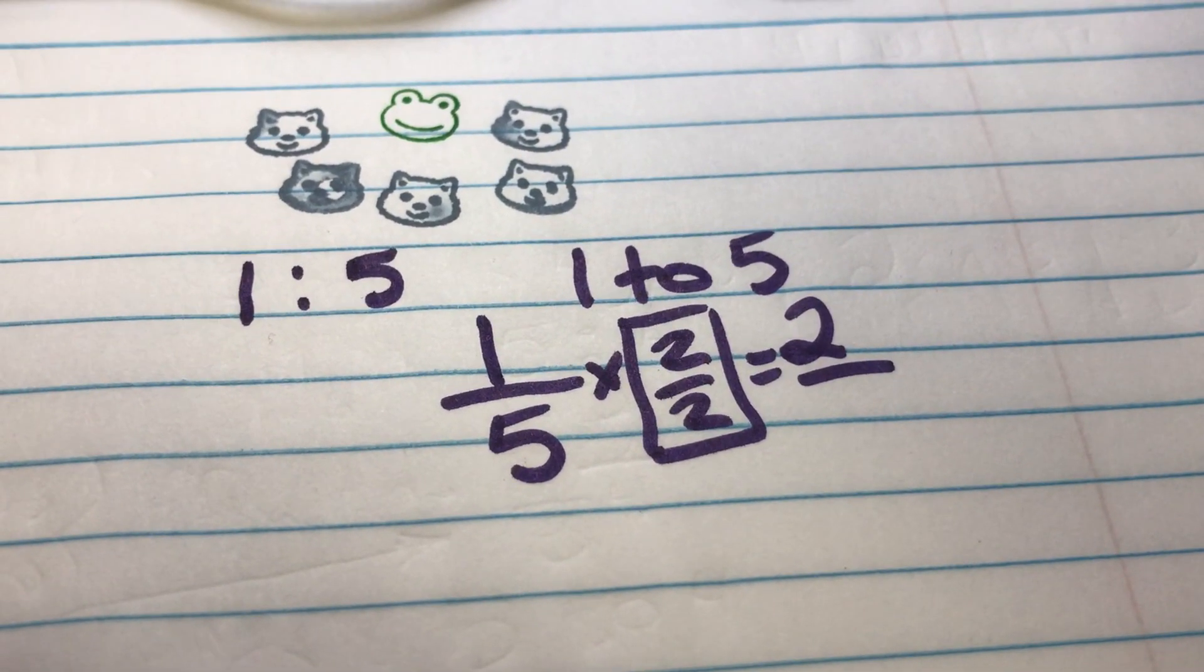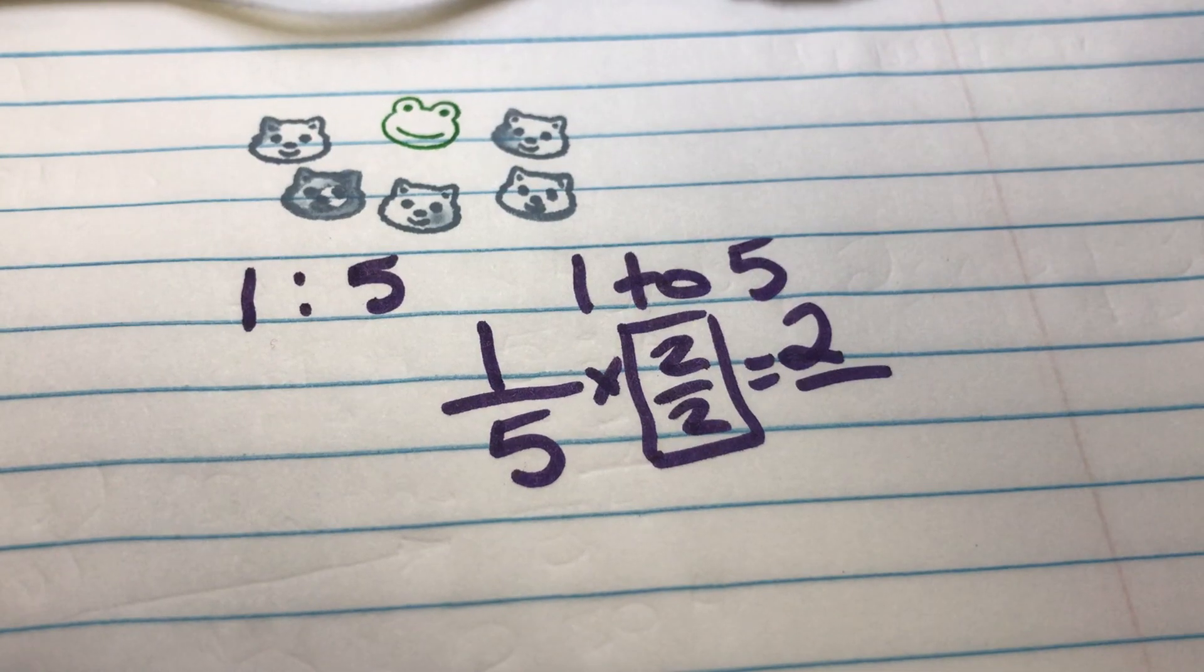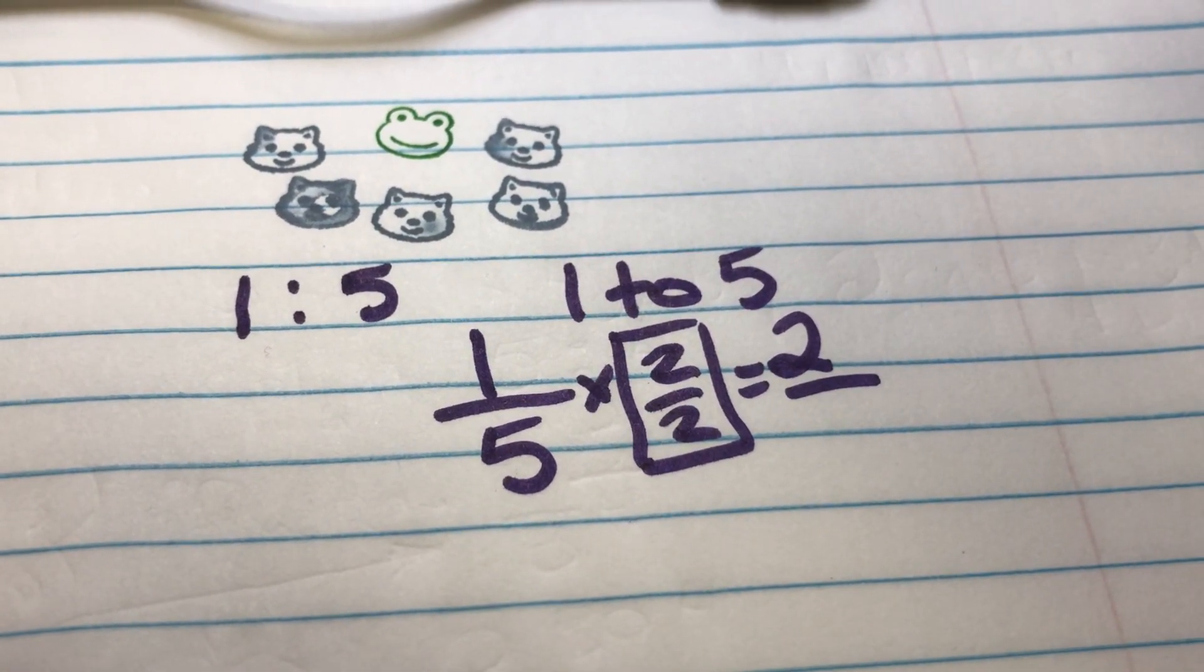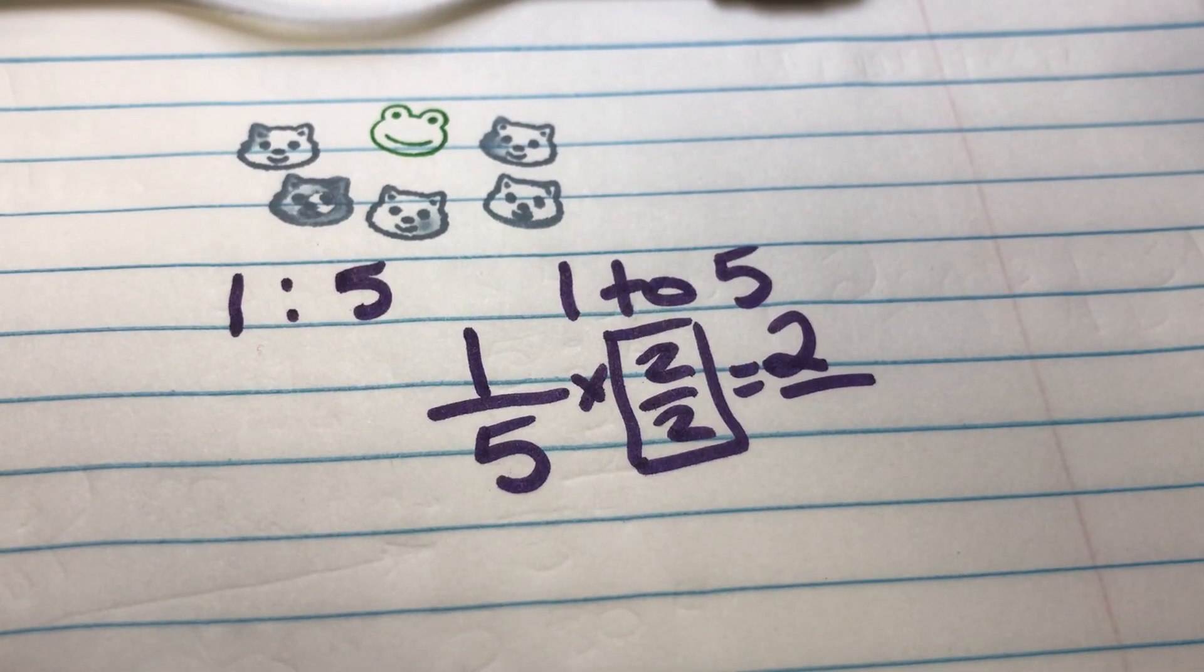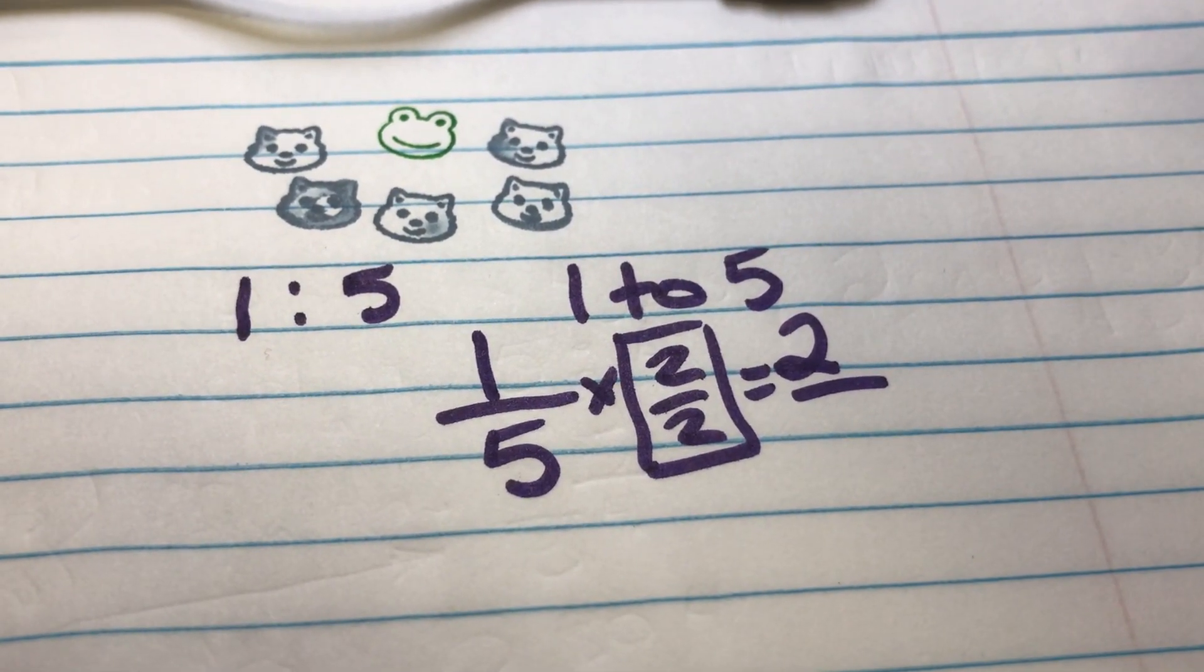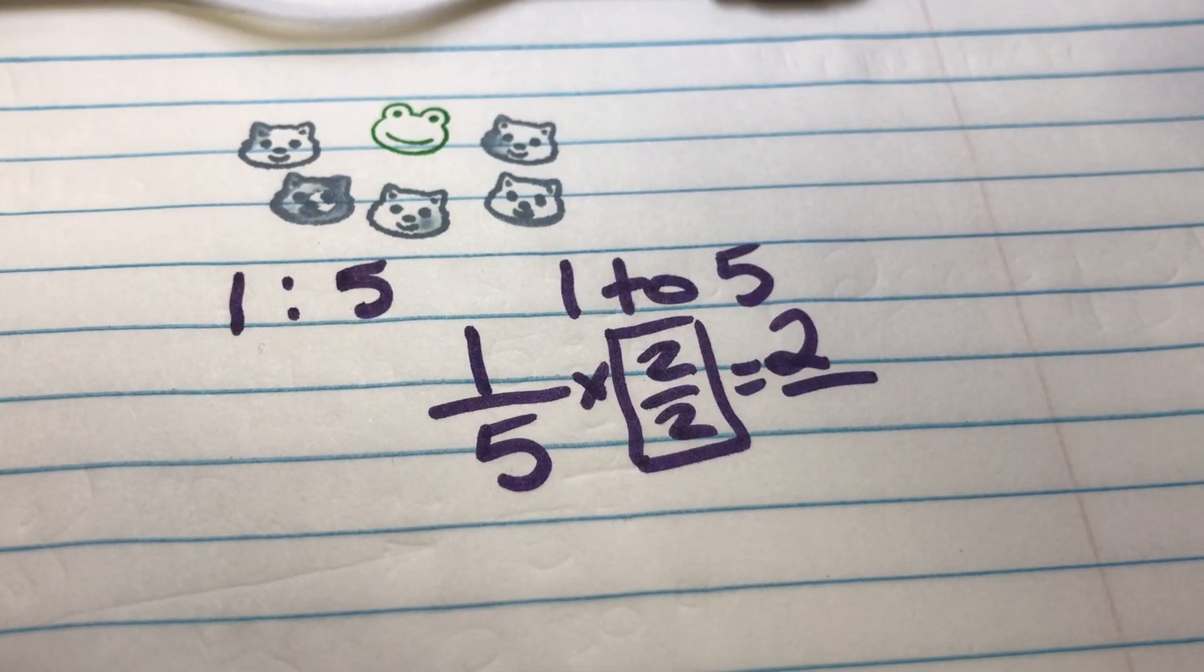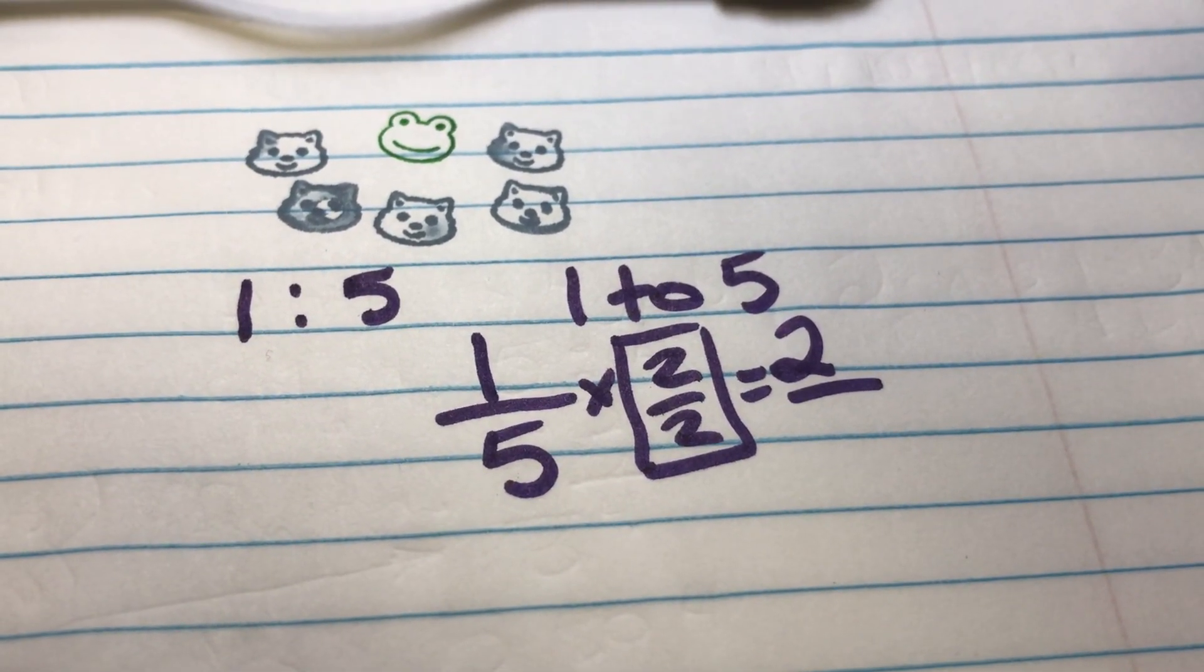So if the ratio is one to five for frogs to cats, and we know that there are two frogs in the entire pet store, then we can figure out how many cats there are by using this ratio. If there's double the number of frogs than what's listed in the ratio, then there must be double the number of cats.